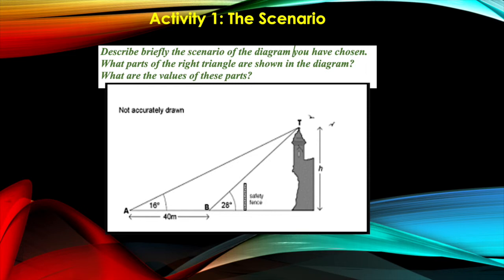There is also the safety fence that is in between the two points and the watchtower. So that's basically the scenario shown in the diagram.